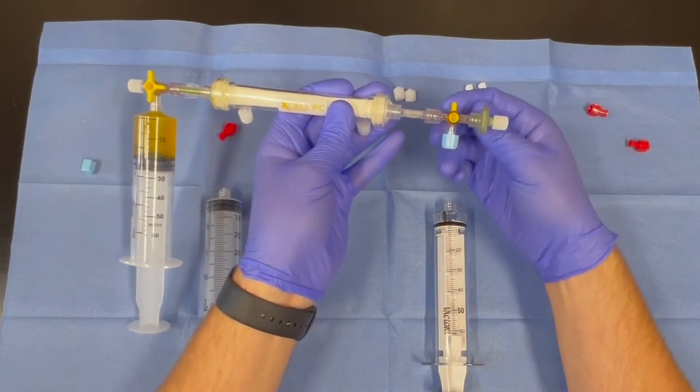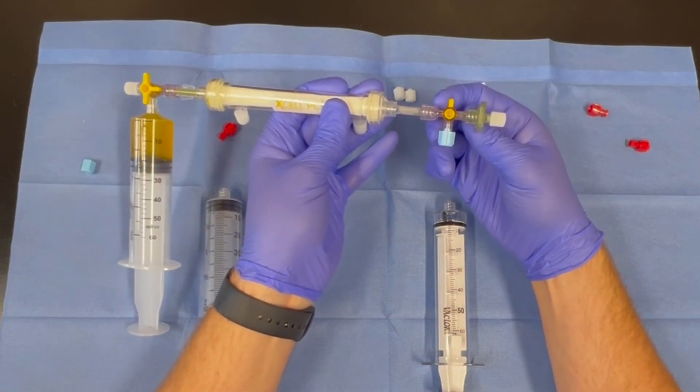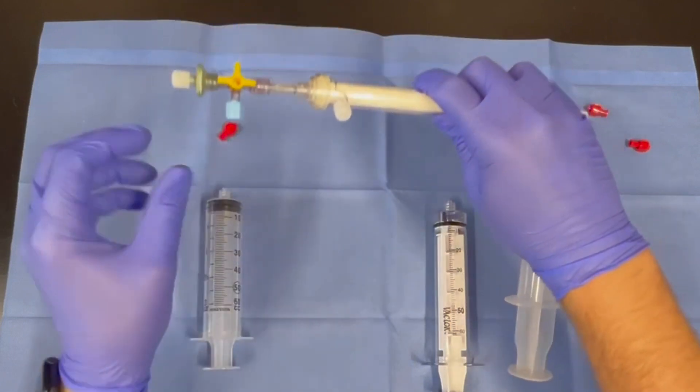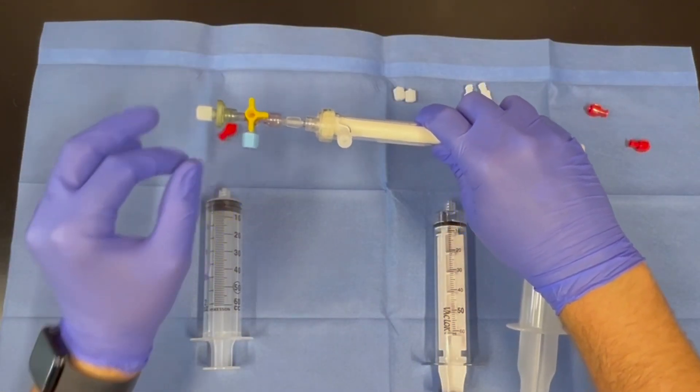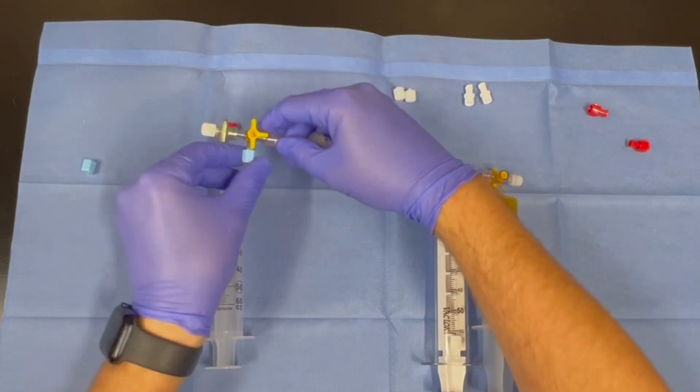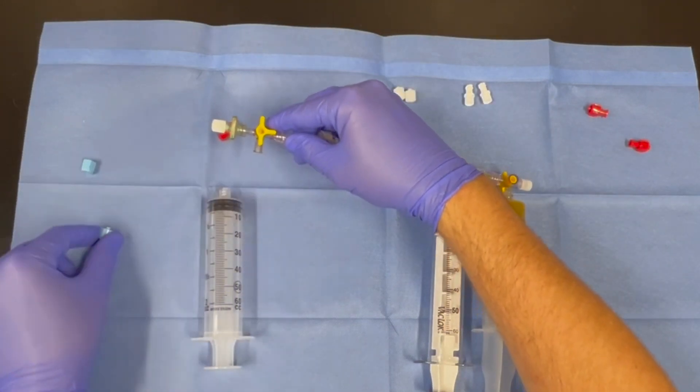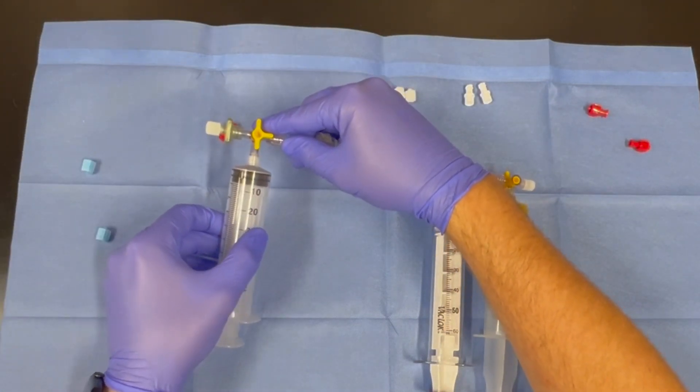Turn the entire filter over and orient the three-way stopcock as shown. Remove the second blue cap and connect the primed empty 60 ml syringe.